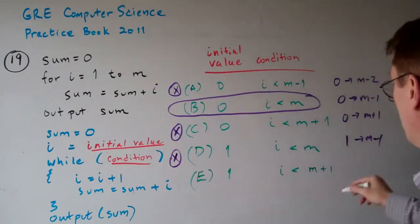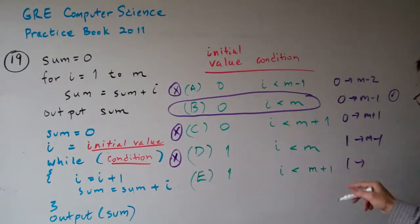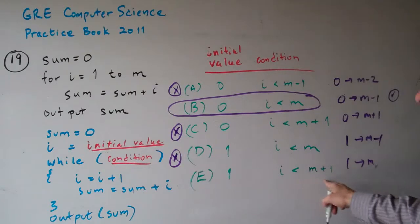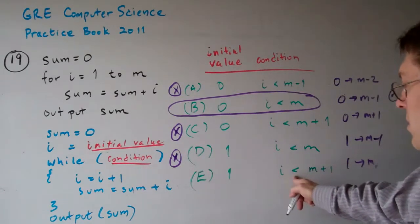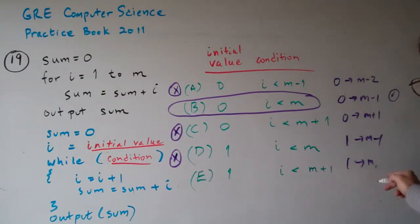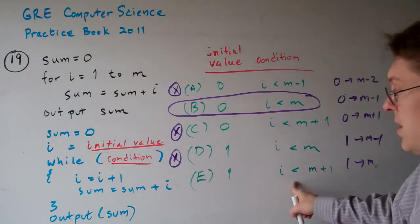Option E goes from 1 to m plus 1. Well, it actually goes from 1 to m because we don't go all the way to m plus 1. So it goes from 1 to m. That's a good possibility because it's the right number of iterations.